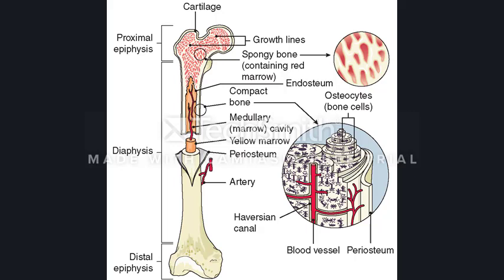Bones have a central cavity, particularly evident in a long bone. That's a shaft down the centre, usually filled with marrow, and that cavity makes the bone lighter. Lastly, you've got a periosteum — a tough, thin membrane that covers the very outside of the bone, and it has an absolute network of nerves within it.